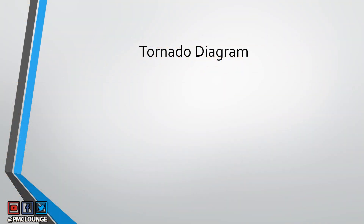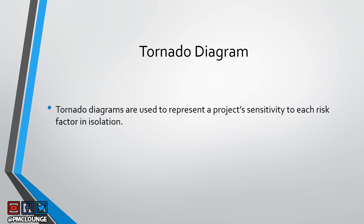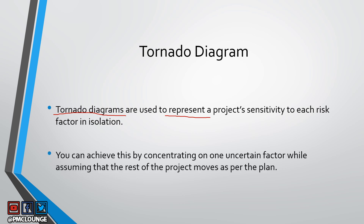Now let's talk about the tornado diagram. Sensitivity analysis and tornado diagram are closely related. When doing sensitivity analysis, you look at a project's risk factor — one risk factor in total isolation — and consider how much impact that risk would have on your project if it were to materialize. Tornado diagrams are used to represent a project's sensitivity to each risk factor in total isolation, by concentrating on only one uncertain factor and assuming the rest of the project is moving as per plan.